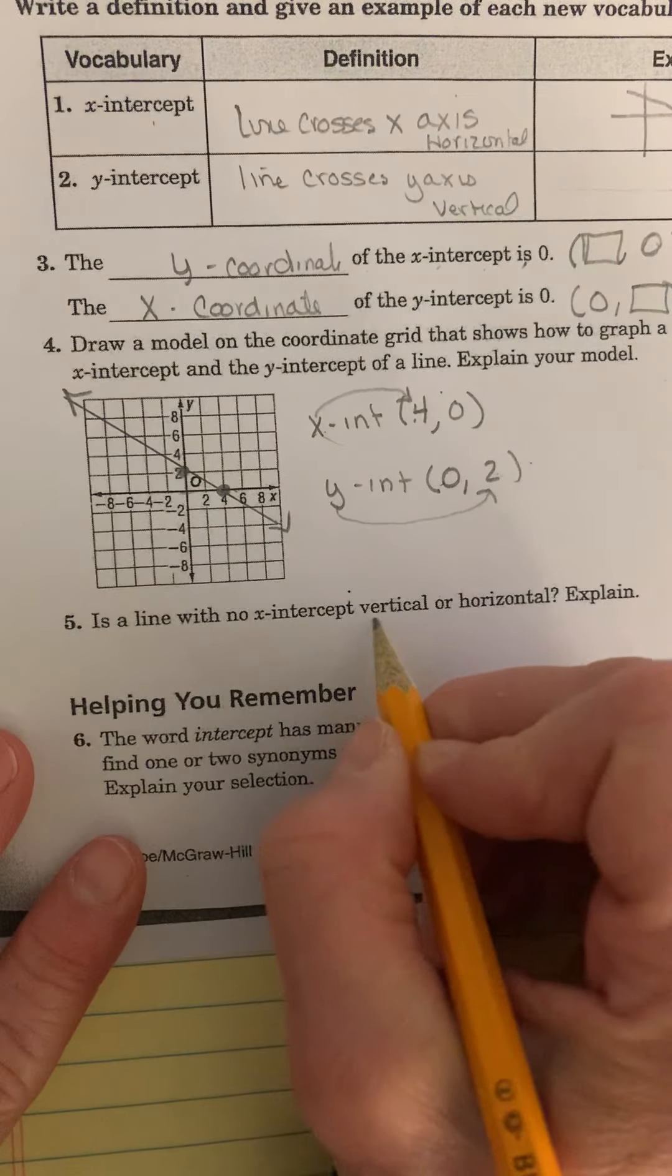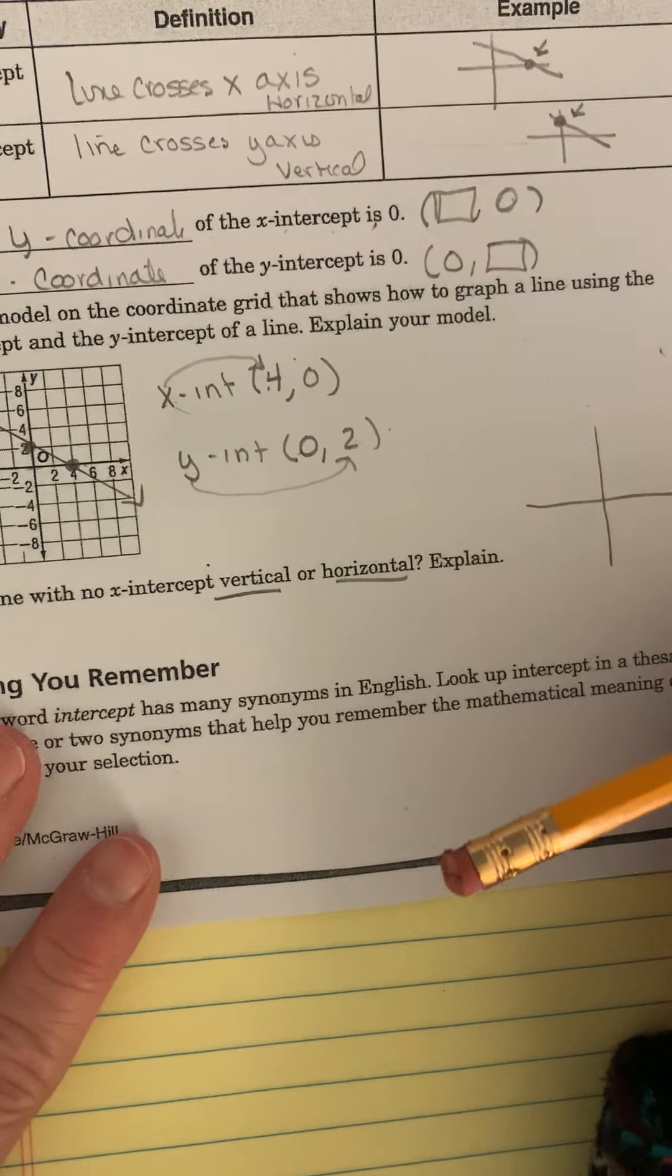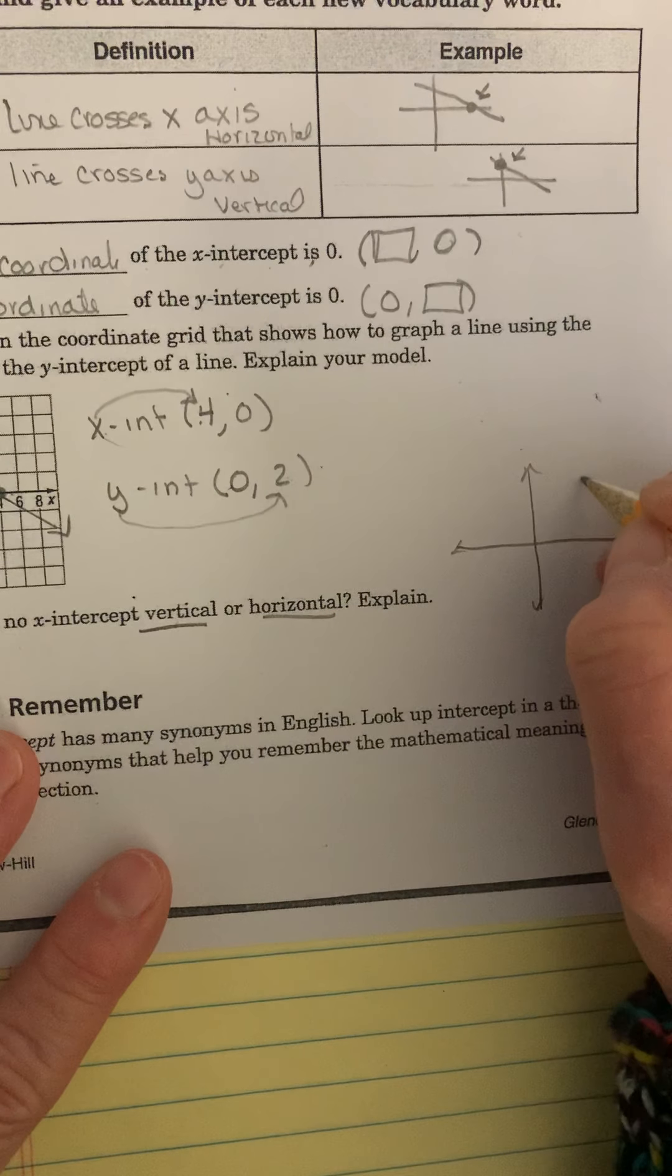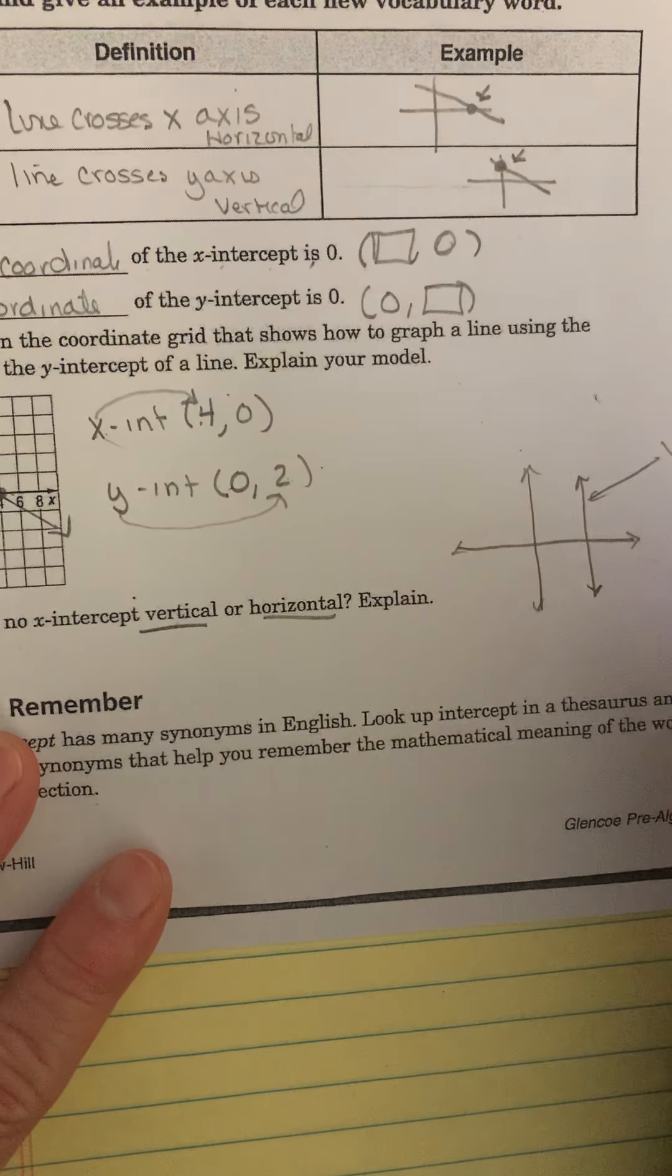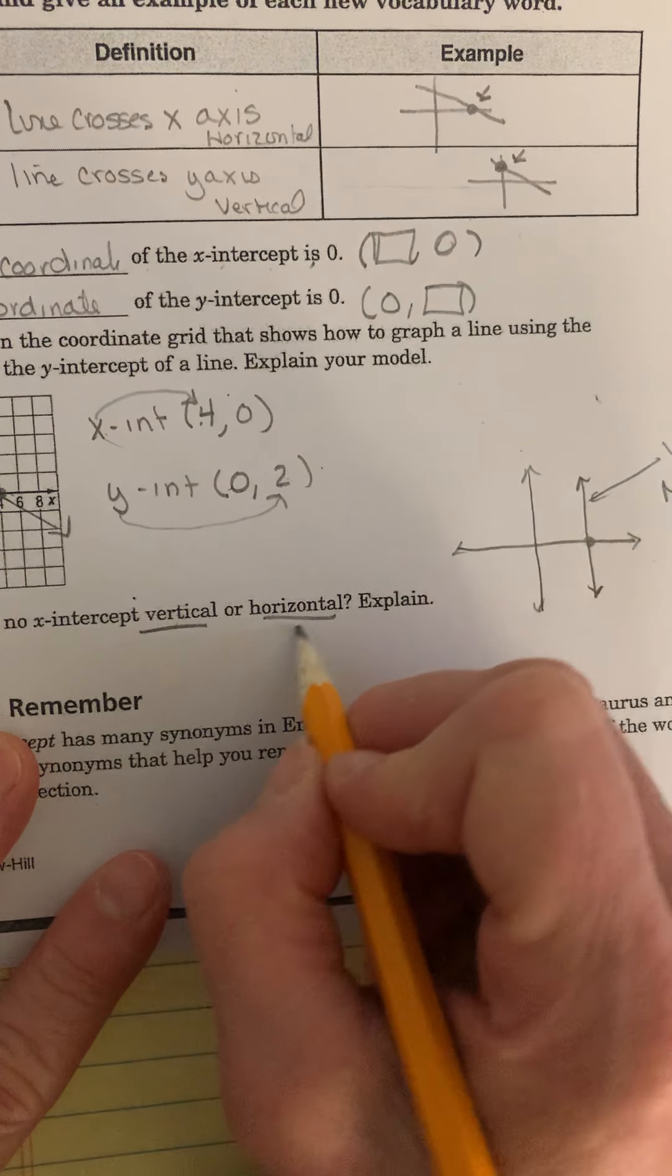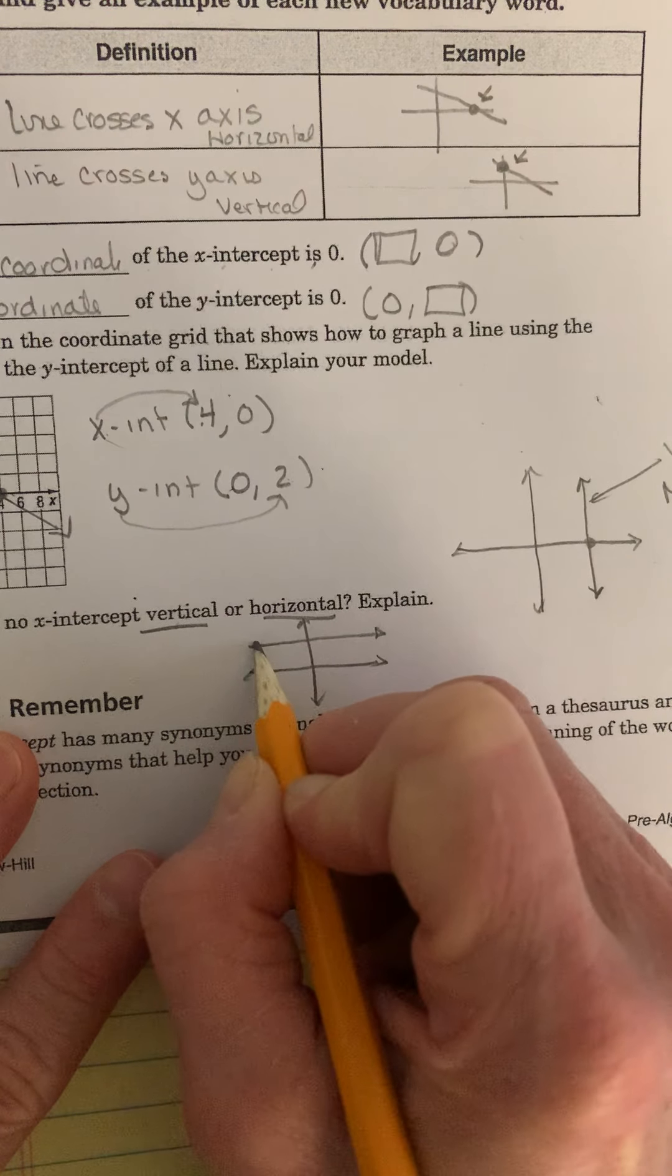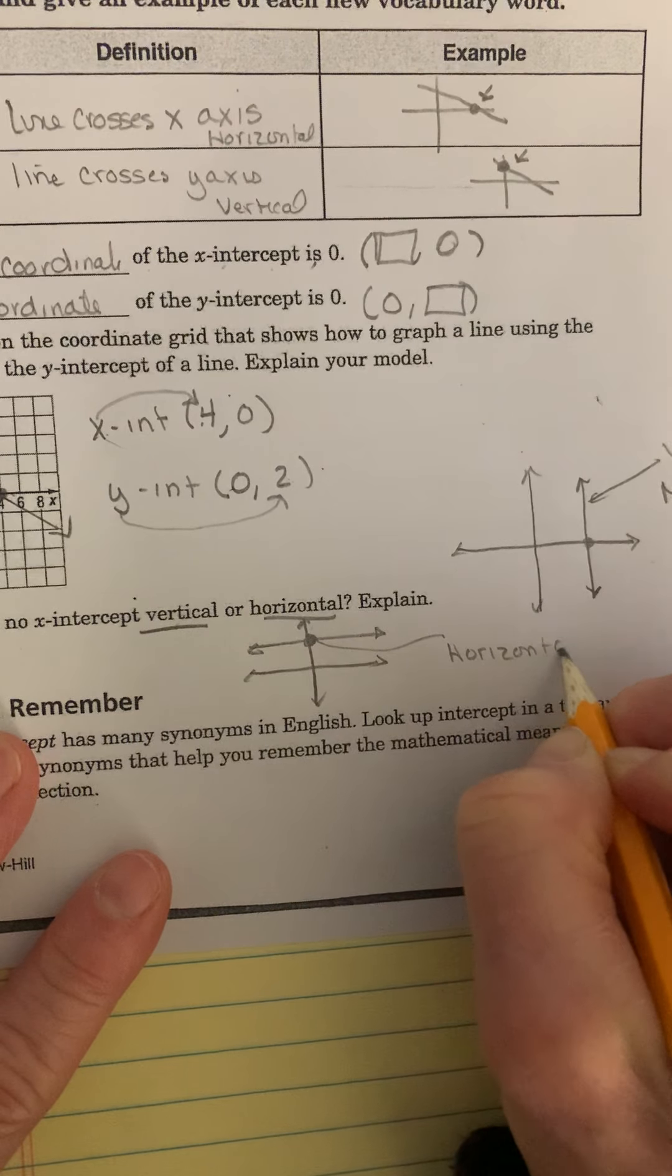If it's a vertical or horizontal line, meaning if this is my coordinate grid right here and I have a vertical line, that's vertical, I would have no y-intercept. Right? I would only have an x-intercept because it doesn't cross the y value. If I had a horizontal line, so if this is my coordinate grid and I had a horizontal line like this, I would have no x-intercept. I would only have a y-intercept. So keep that in mind when you're drawing vertical and horizontal lines.